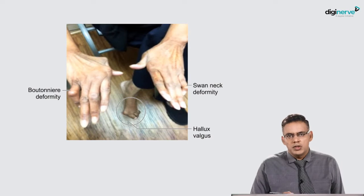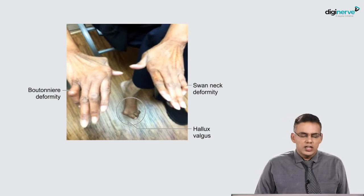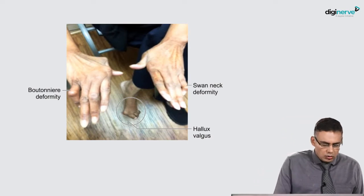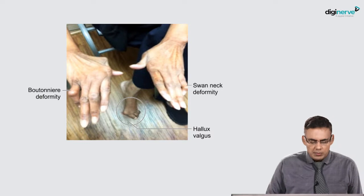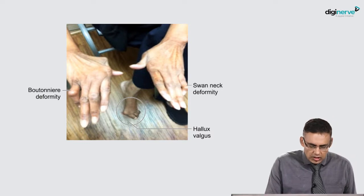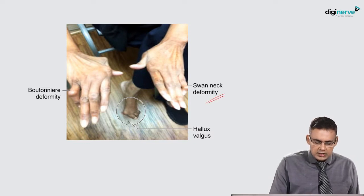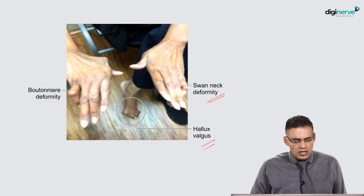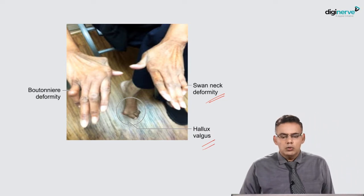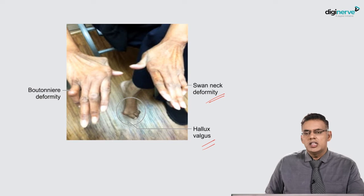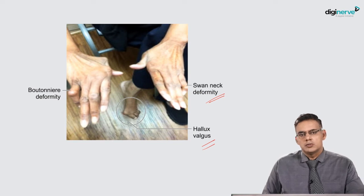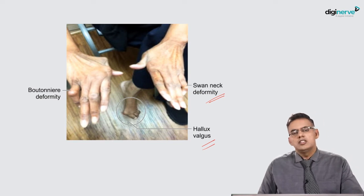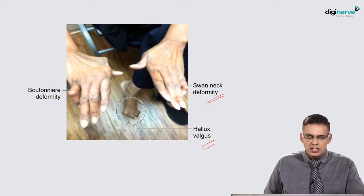This is a presentation seen in a patient with rheumatoid arthritis. You can see the boutonnière deformities over here, the swan neck deformity, and a hallux valgus deformity on the big toe. These are the deformities with which patients present, and usually they present late.